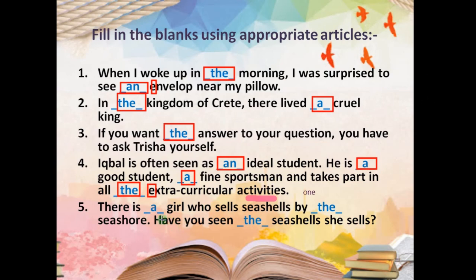There is a girl — a very common, unspecified girl, so 'a.' She sells seashells by the seashore — 'the seashore' because a particular, specific place is mentioned. Have you seen the seashells she sells? Again 'the' because: first, 'seashells' is plural; and second, we are talking about the particular seashells she is selling. Remaining sentences are given as homework — I hope you can do them.